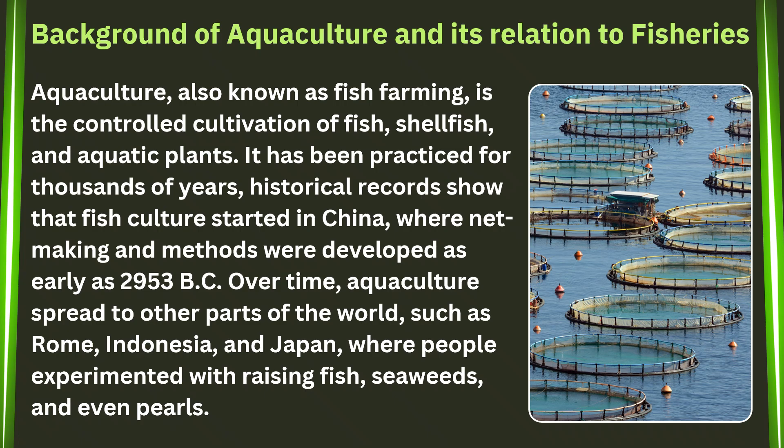Background of aquaculture and its relation to fisheries. Aquaculture, also known as fish farming, is the controlled cultivation of fish, shellfish, and aquatic plants. It has been practiced for thousands of years; historical records show that fish culture started in China, where net-making and methods were developed as early as 2953 BC. Over time, aquaculture spread to other parts of the world, such as Rome and Japan, where people experimented with raising fish, seaweeds, and even pearls.